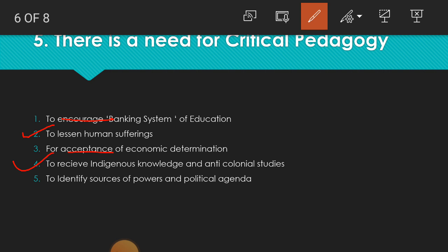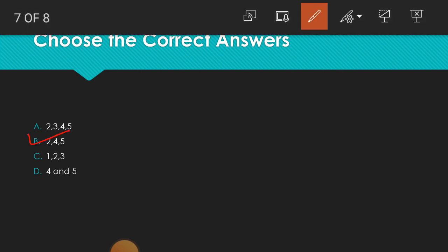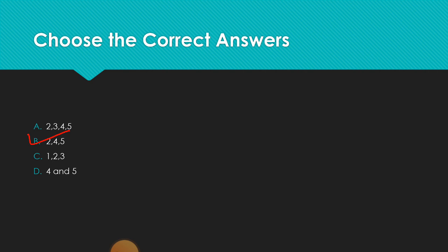Option 5 — to identify sources of power and political agenda. So we can say 2, 4, and 5 is the correct answer. Therefore B is the correct answer. This is all about five important MCQs from the topic of critical pedagogy from the subject Education syllabus.